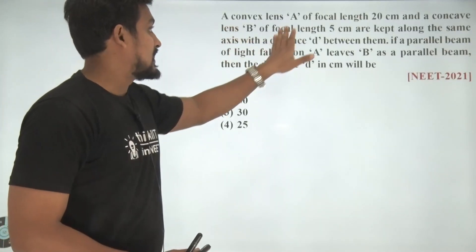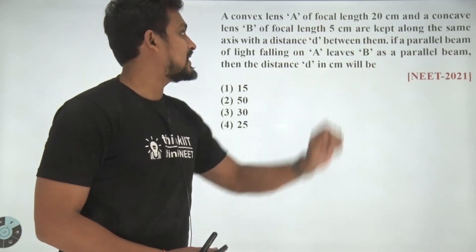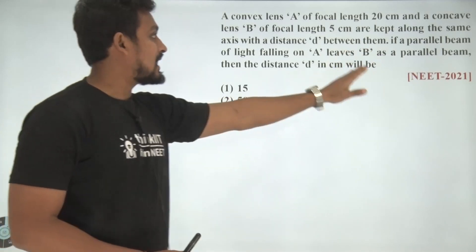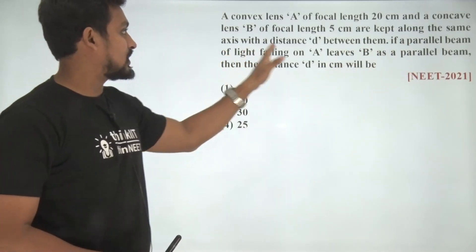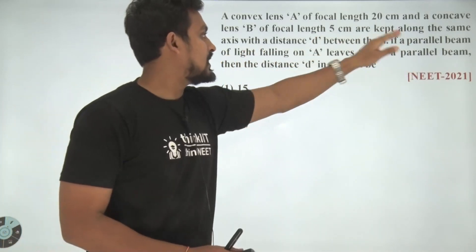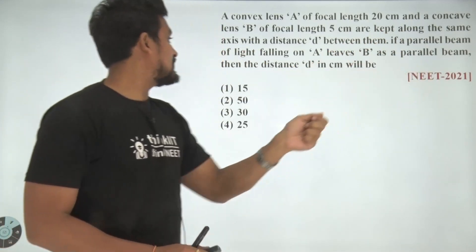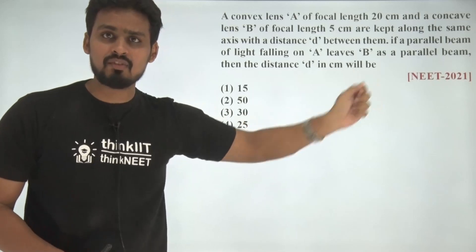The first question is: a convex lens A of focal length 20 centimeter and a concave lens B of focal length 5 centimeter are kept along the same axis with a distance d between them. If a parallel beam of light falling on A leaves B as a parallel beam, then the distance d in centimeter will be?